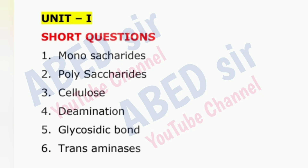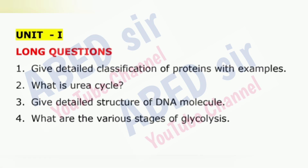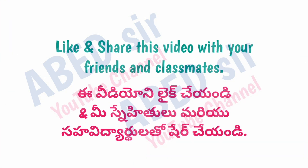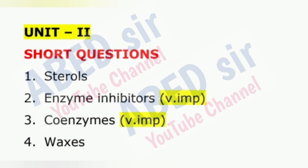Students, on screen you may see each unit short and long questions one by one. For short questions, write half a page and include a definition with an example. Based on the short question, draw a diagram, table, or write syntax or formula. For long questions, write 3 to 4 sides of pages and include definition and explanation with an example. Based on the long question, draw diagrams, tables, and programs with output.